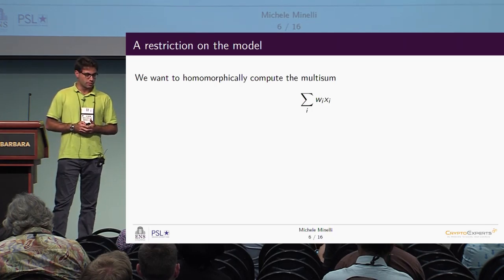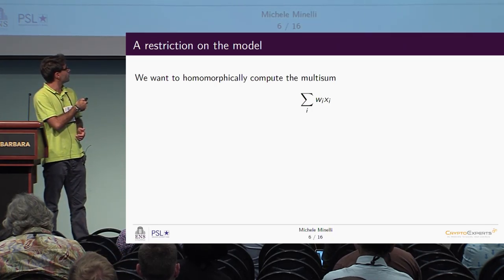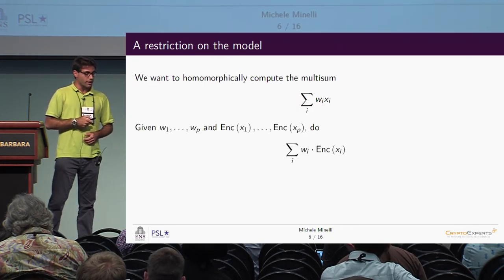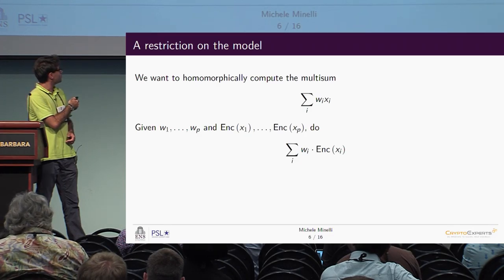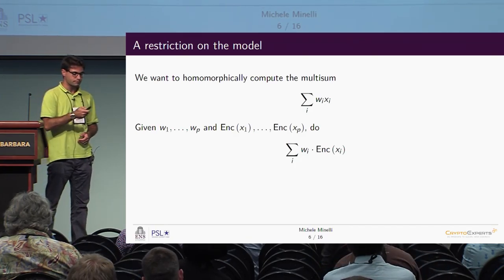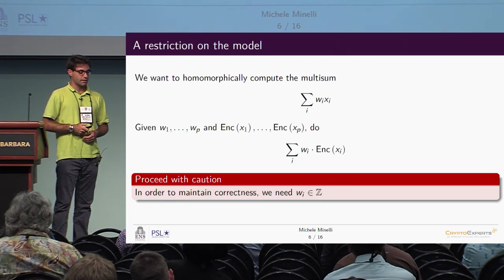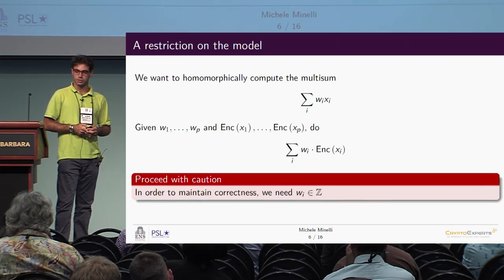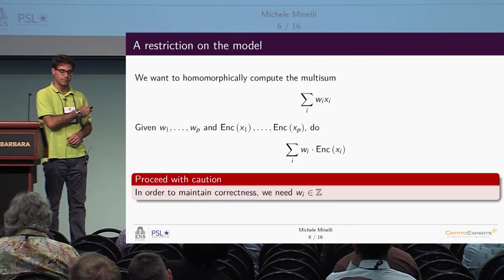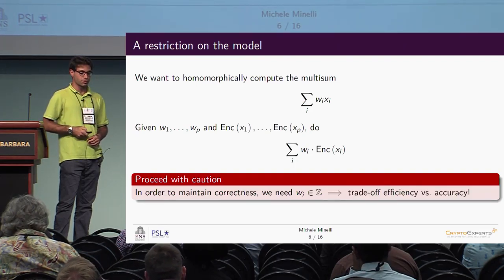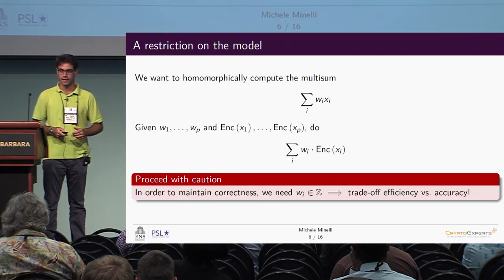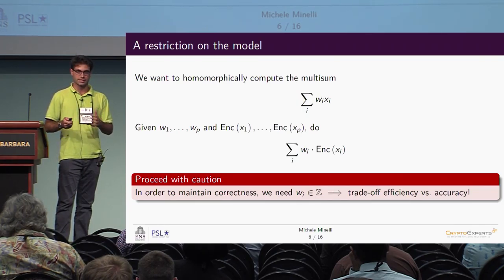A restriction on the model: one of the steps we must perform is homomorphically computing the multisum. We will be given the weights of the model in the clear and encryptions of the inputs — we take the encryptions, scale them by the corresponding weight, and sum everything together. To maintain correctness, we can scale only by integer constants; scaling by floating points loses correctness. So the weights must be integers, which induces a trade-off between efficiency and accuracy depending on how precisely we discretize the weights.